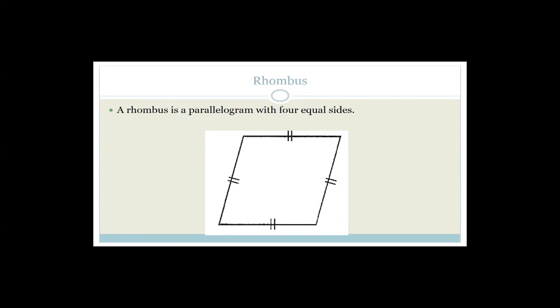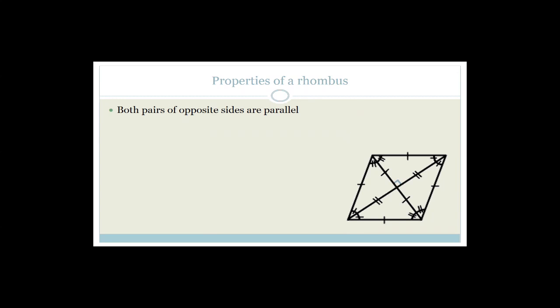Now let's talk about a rhombus. A rhombus is a parallelogram with all four equal sides — all four sides are equal in length. That means it still has the properties of a parallelogram: both pairs of opposite sides are parallel, and both pairs of opposite sides are equal in length.